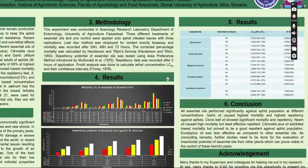In conclusion, all essential oils performed significantly against aphid populations at different concentrations. The highest mortality and highest repellency were observed in garlic oil. Clove oil also showed significant mortality and repellency. Neem oil showed high mortality but was the least effective repellent. Citronella java oil exhibited the lowest mortality but proved to be a good repellent against Myzus persicae. Eucalyptus oil was least effective overall but can still be used in IPM programs. Further studies are needed to evaluate the insecticidal potential of essential oils from other plants for controlling these harmful pests.